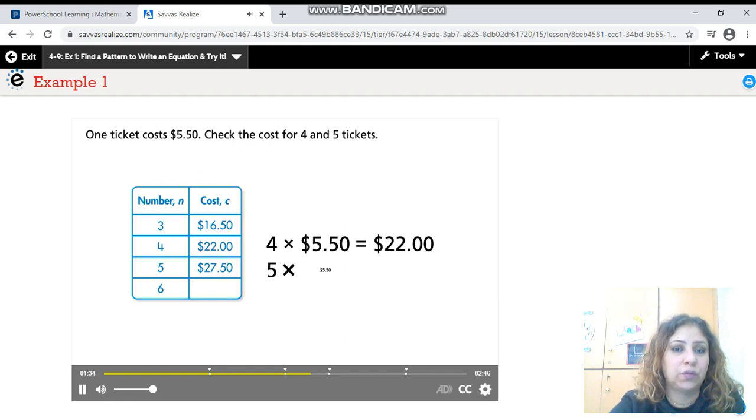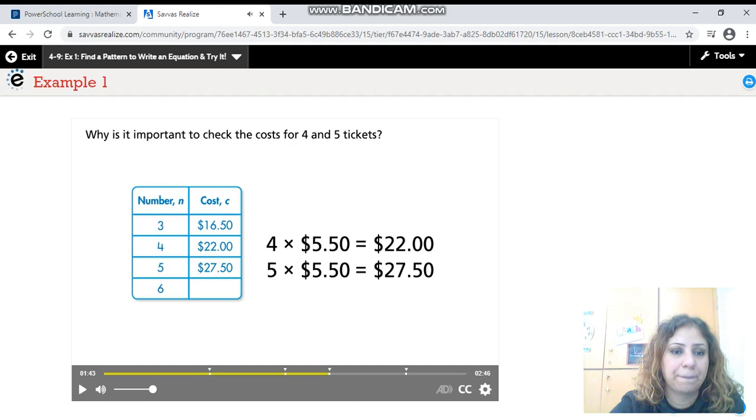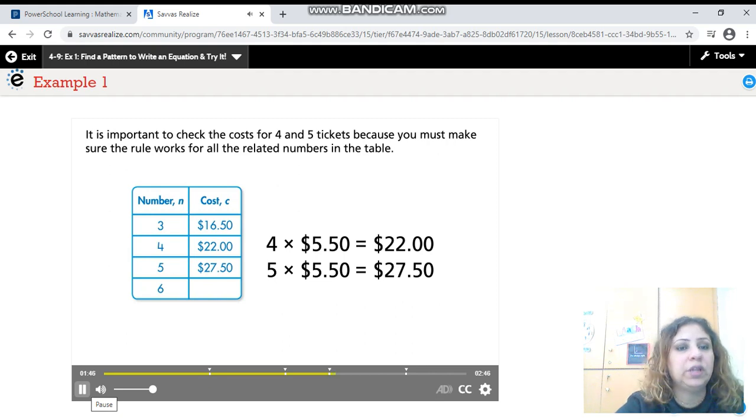Check the cost for 4 and 5 tickets. Why is it important to check the cost for 4 and 5 tickets? Yes, it is important to check the cost for 4 and 5 tickets because you must make sure the rule works for all the related numbers in the table.